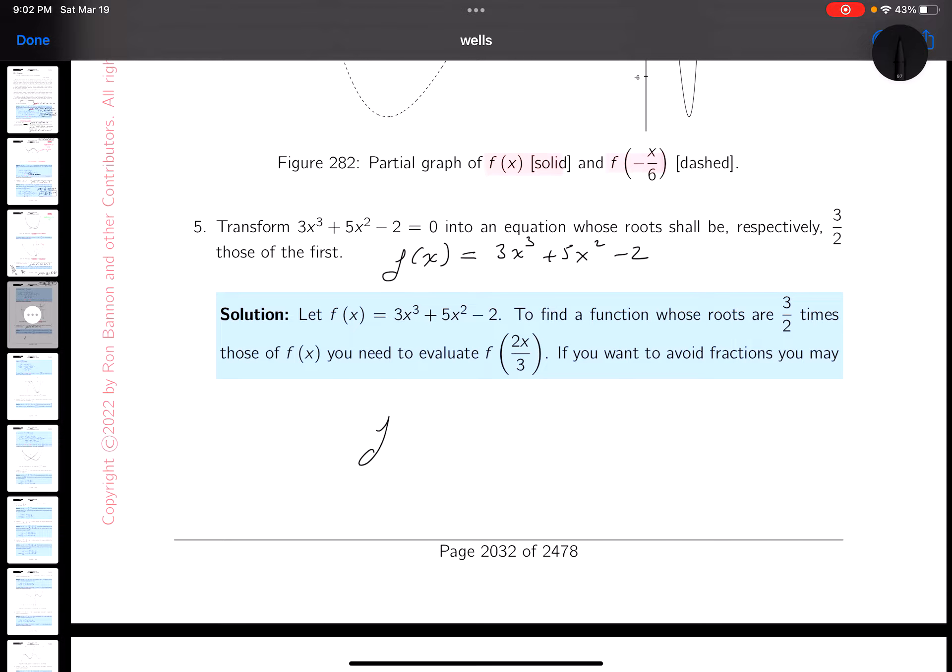So I have to transform it. It's going to be f of x, and now I'm going to divide by 3 over 2. I'll simplify that. That's going to be f of 2x over 3.